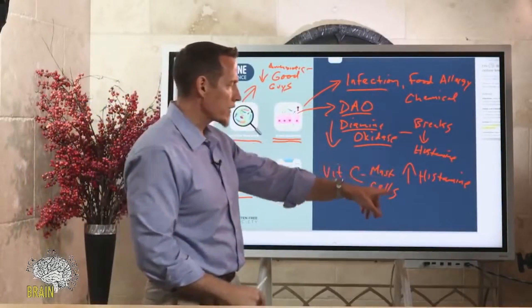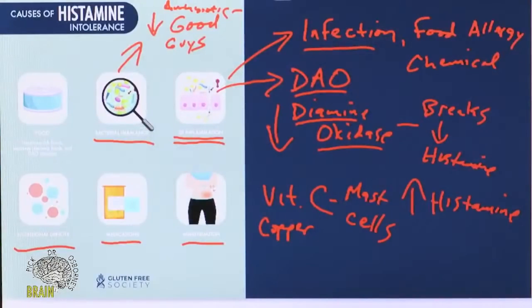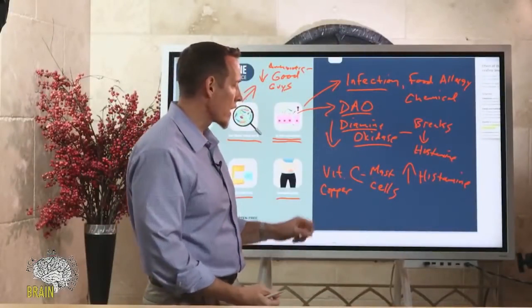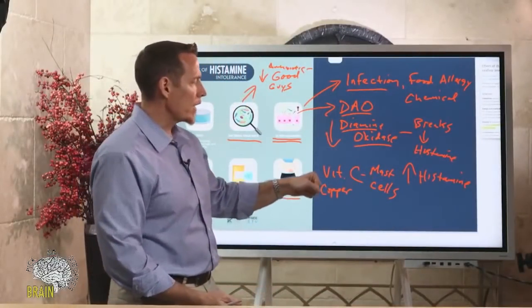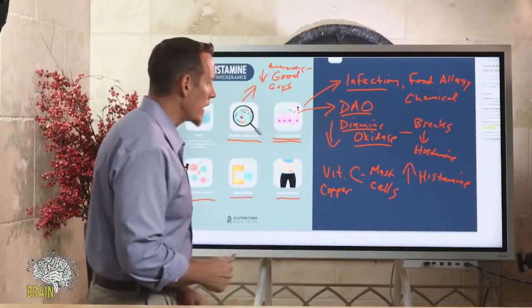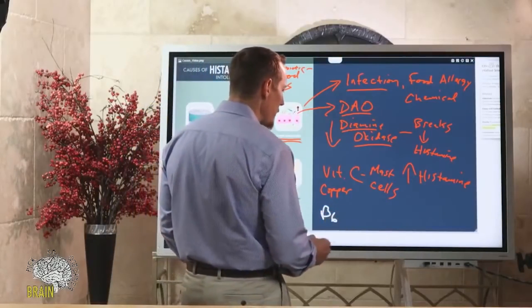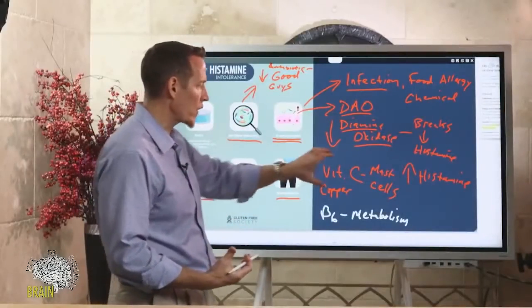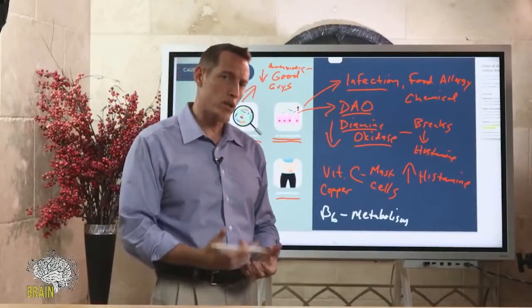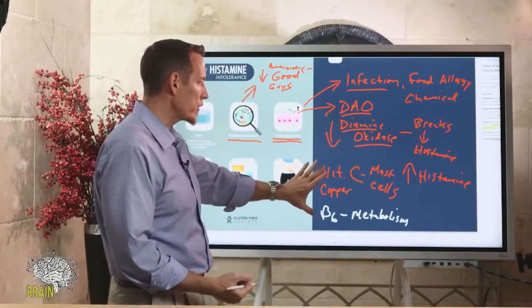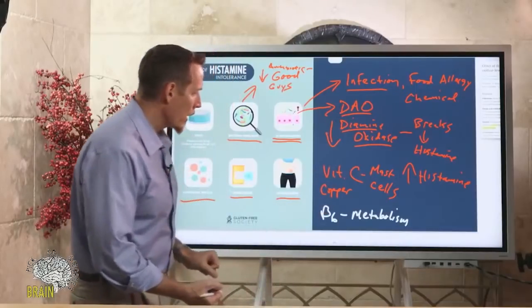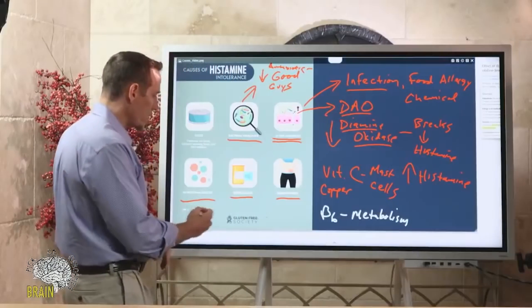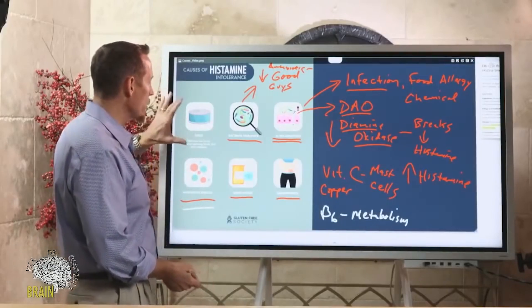Regarding nutritional deficiencies: vitamin C stabilizes the membrane around mast cells, making them less likely to constantly release histamine. Copper is very important for histamine breakdown by supporting the production of diamine oxidase. Vitamin B6 is also important in the metabolism of histamine. These three nutrients are critical for maintaining healthy histamine levels and are often not discussed in the context of histamine management.